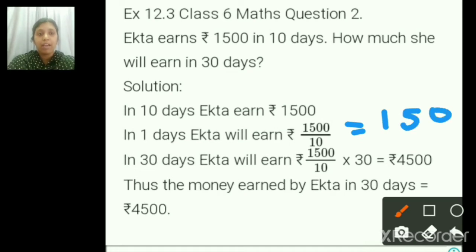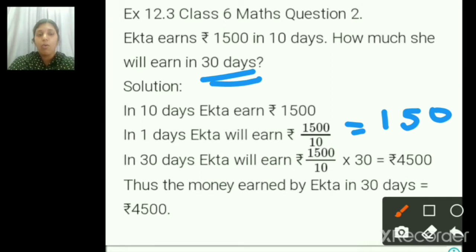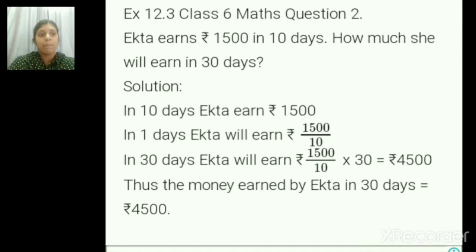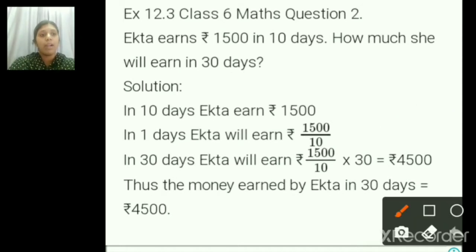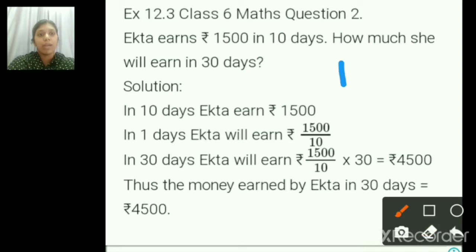Now we have to find how much she is earning for 30 days. So we are finding for 30 days — we have to multiply 150 into 30. Now when you multiply them, 150 into 30, so 150 you have a 0.